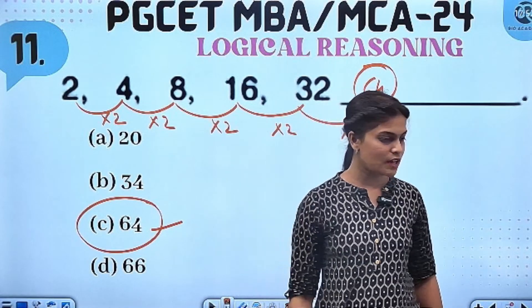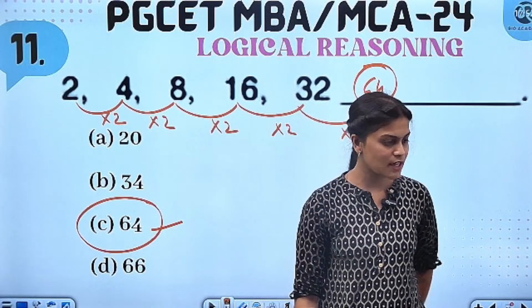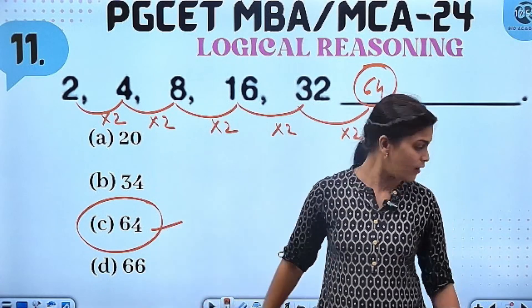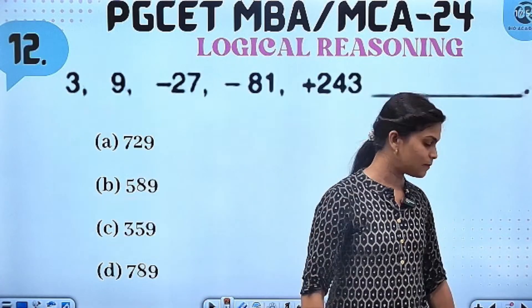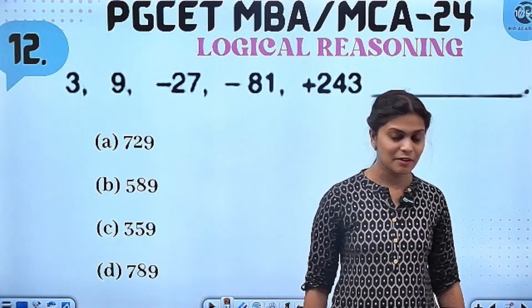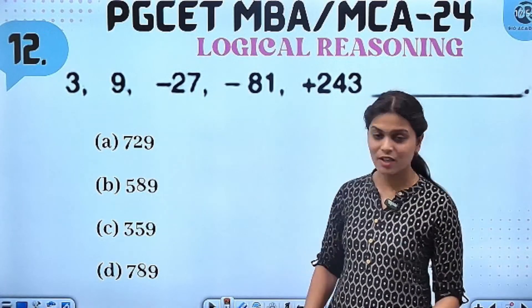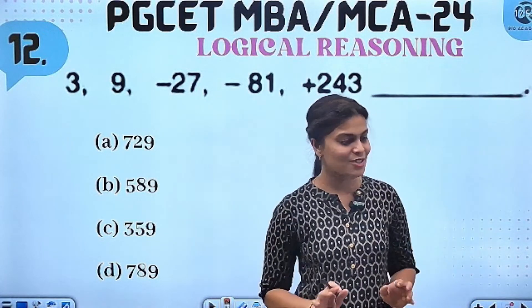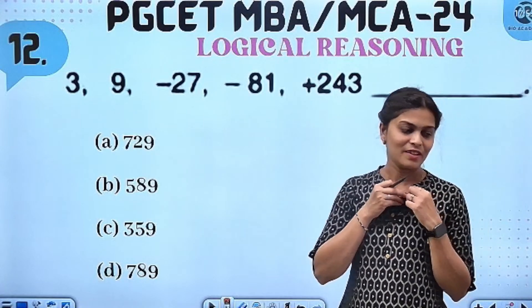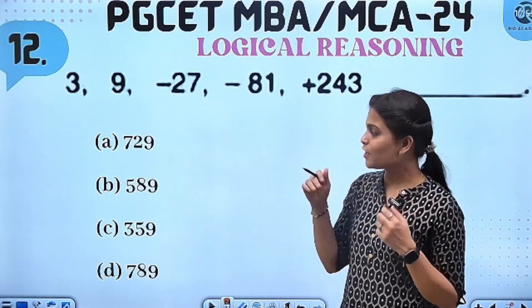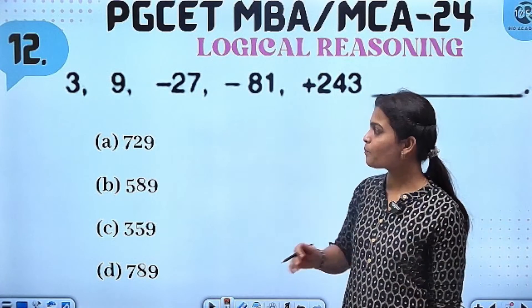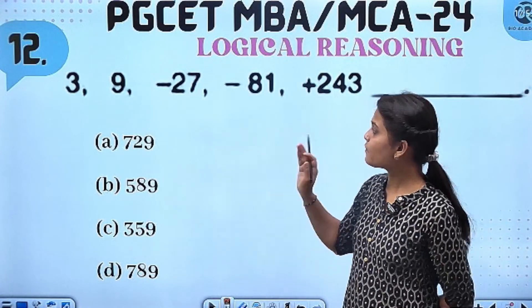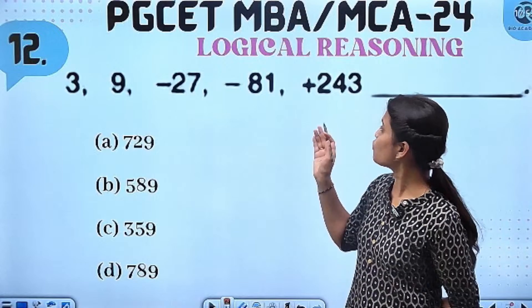Nagraj, Devraj, Hashita. Yes. Ranjita — clear? So, next question is here. 3, 9, 27, 81, 243. Then what?